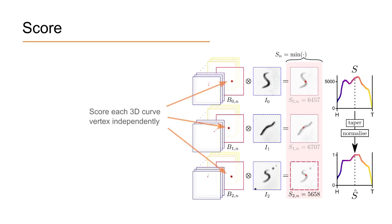To detect if the curve is bridging a gap, each vertex is scored by correlating its corresponding blobs with the images. We take the minimum of the three scores to ensure that vertices failing to match pixels in any one of the views will receive low scores, regardless of how well they match pixels in the other images.